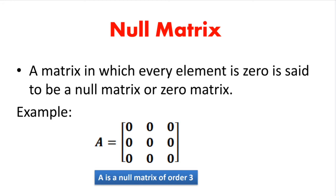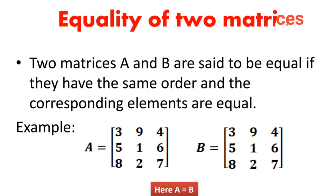A zero matrix is one in which all elements are 0. Regarding equality of two matrices: two matrices A and B are said to be equal if they are of the same order and the corresponding elements are equal.